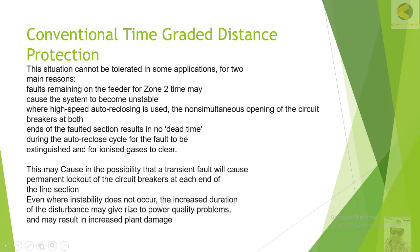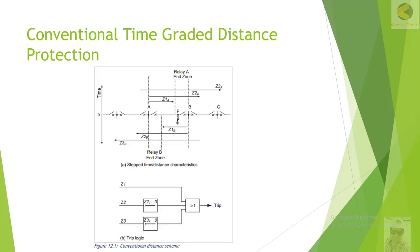Even where instability does not occur, the increased duration of the disturbance may give rise to power quality problems and result in increased plant damage. The fault feeding will obviously increase instability and result in poor power quality — there may be voltage dips and frequency dips. For example, if the fault is at F, one breaker will trip immediately while the other breaker trips after a time delay of 300 milliseconds.